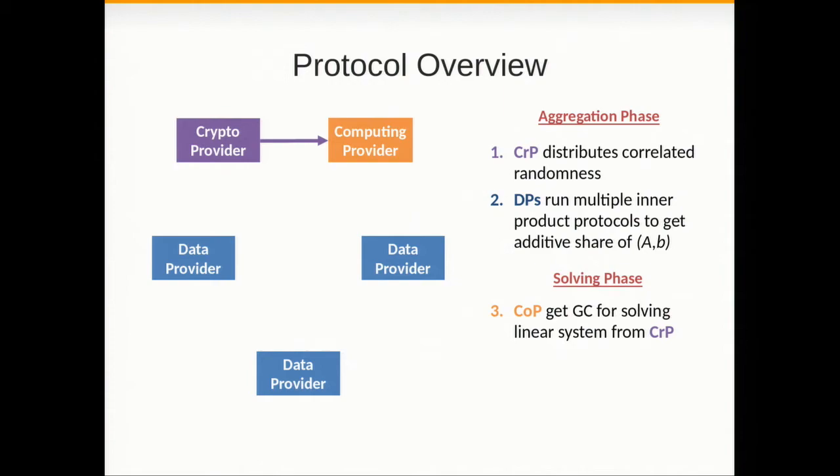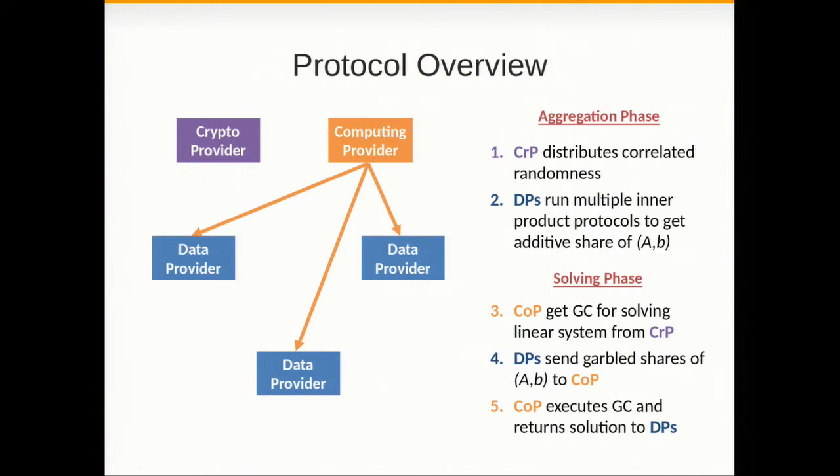In the solving phase, the system of equations is solved by the crypto provider and the computing provider using a garbled circuits protocol. The crypto provider is the garbler. The computing provider is the evaluator who gets inputs in a secure way from the data providers and then evaluates the circuit, returns encryption of the solution, the parameters of the model, and then the parties can decrypt the model with the help of the crypto provider.